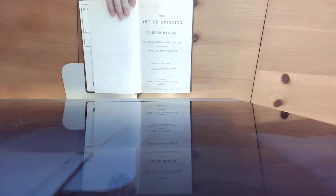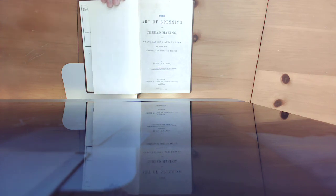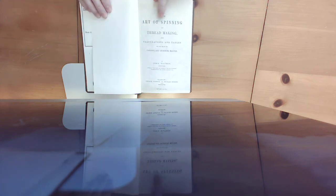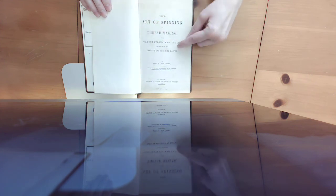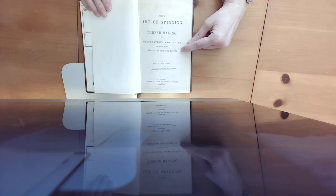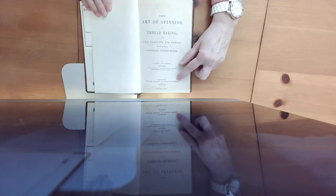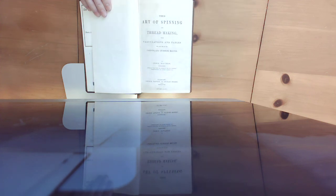This is a book that I got through interlibrary loan and I'm currently typing out because it's pretty fragile. This is an 1878 volume called The Art of Spinning and Threadmaking with Calculations and Tables for the Use of the Carding and Spinning Master by John Watson. This was printed in Glasgow in 1878.